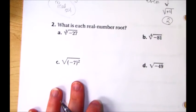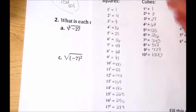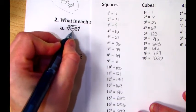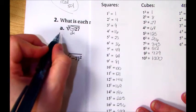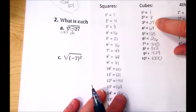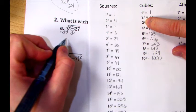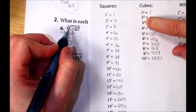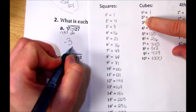Try these again. Cube root. Go to your cube list. Negatives are okay because it's odd. So I'm going to find 27. The cube root of 27 is 3. Since it was negative on the inside, it's negative on the answer.